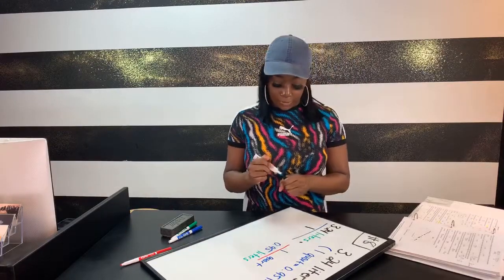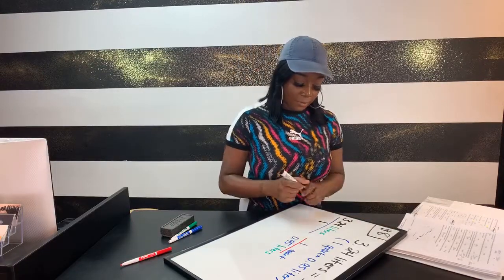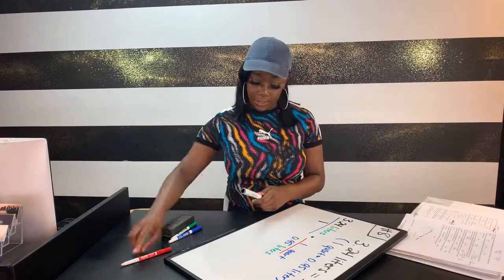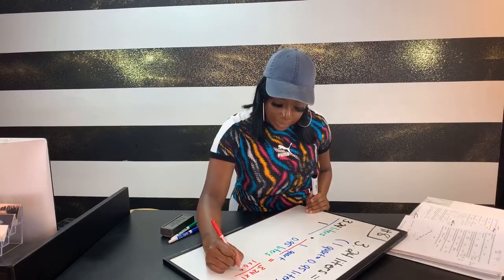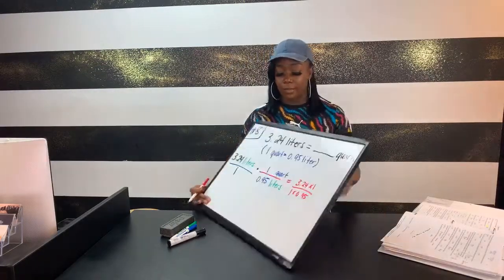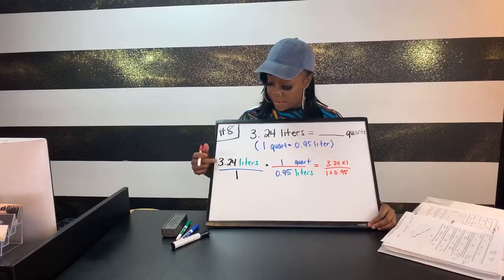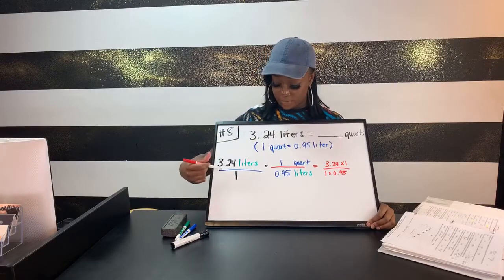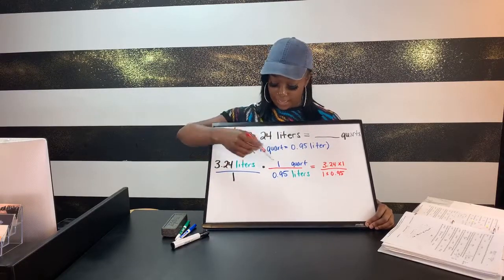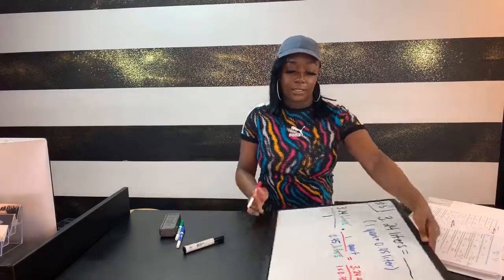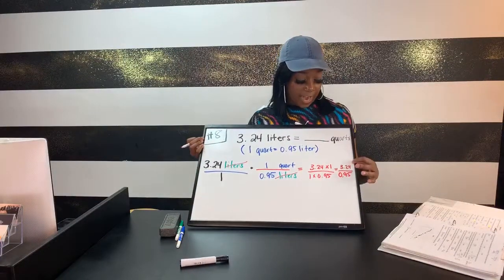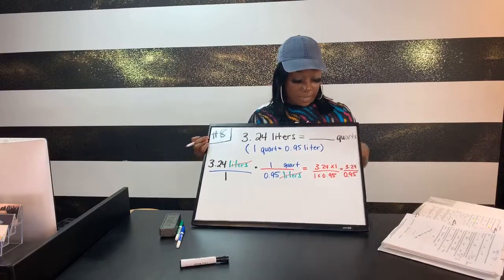We already made 3.24 a fraction. When multiplying fractions, we multiply top to top and bottom to bottom: 3.24 times 1 on top, and 1 times 0.95 on the bottom. Because the liter units are diagonal, they cancel out, leaving us with quarts. So we do 3.24 times 1, which gives us 3.24, and 1 times 0.95 gives us 0.95. Since this is a fraction, we solve it as division: 3.24 divided by 0.95.